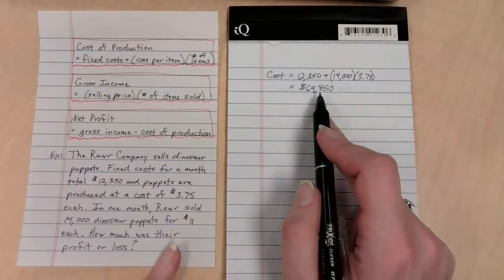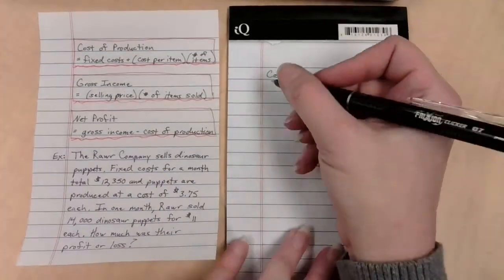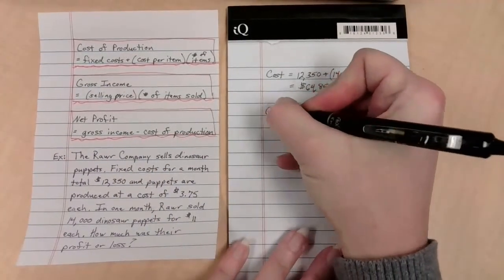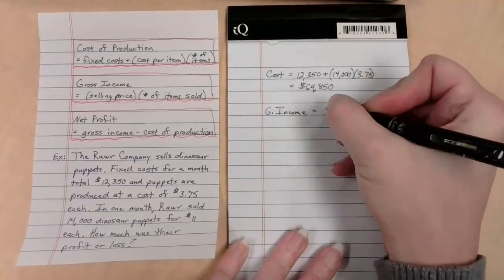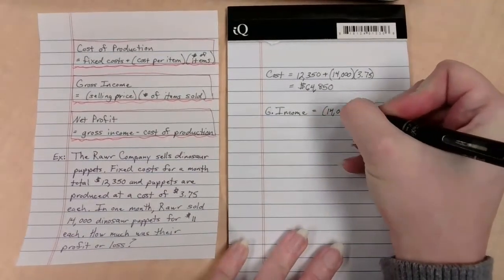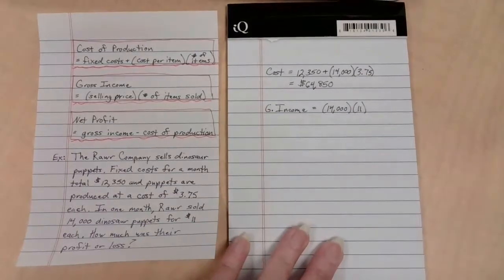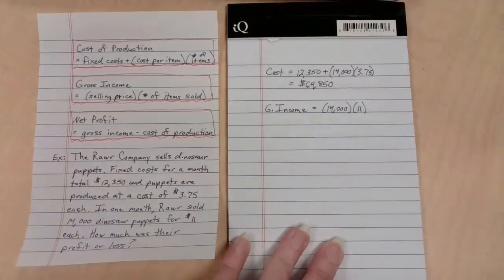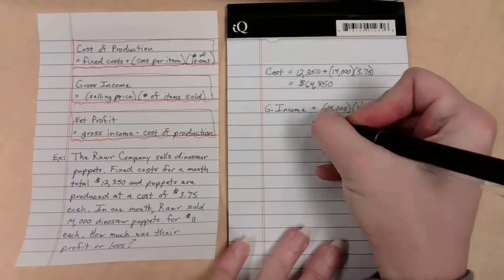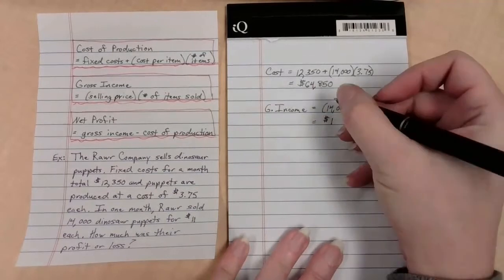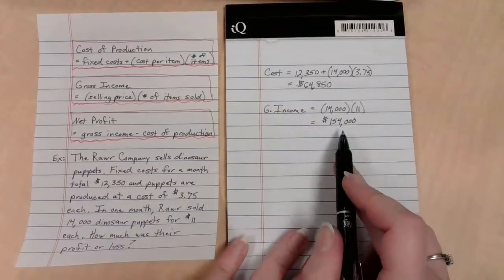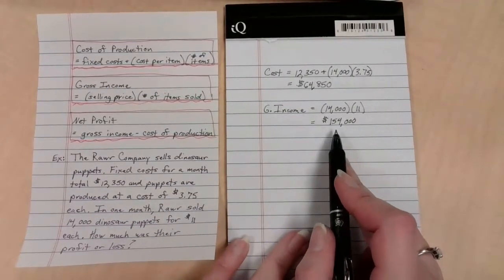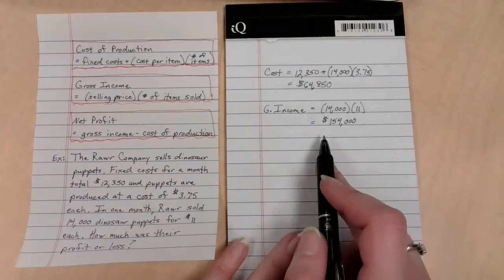If that's the cost, how much money did I make? So gross income, I'm going to take the 14,000 that I sold, but each of these was sold for $11. So I'm going to multiply it times 11 this time. Is that a good thing? Yes, actually that is because guess how much money that means I'm bringing in? $154,000. Why am I happy right now? Because the money that I brought in is more than the money it cost me to make these items to begin with.